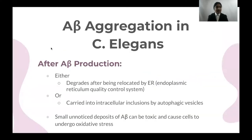In C. elegans, after amyloid beta production, amyloid beta can either degrade after being relocated by the endoplasmic reticulum to remove misfolded proteins. Similarly, the natural function of autophagy could degrade amyloid beta. On the other hand, some unintended deposits of amyloid beta could cause oxidative stress.